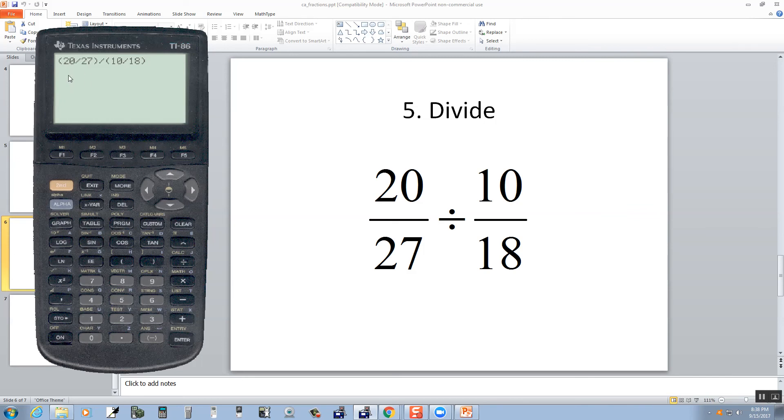Now some calculators allow you there's a fraction capability so you can actually type them in as fractions instead of using a division symbol. But again, just generally put parentheses around each fraction and you just type in and use the divide. And then I do enter. I get a decimal.